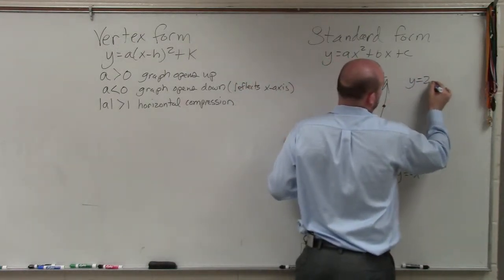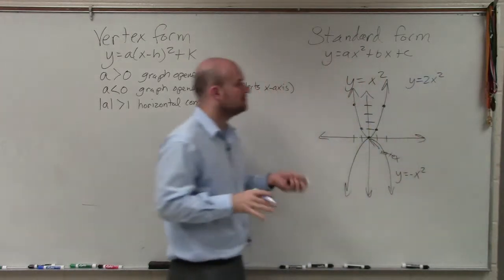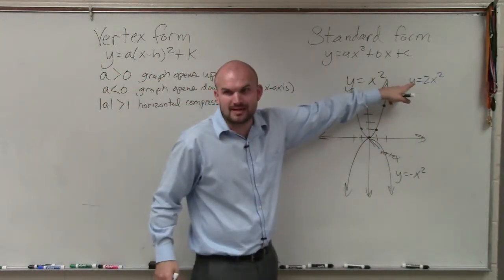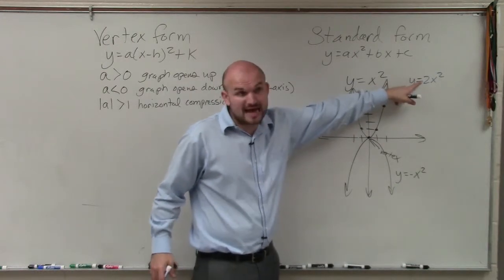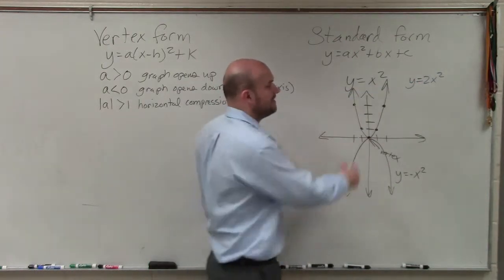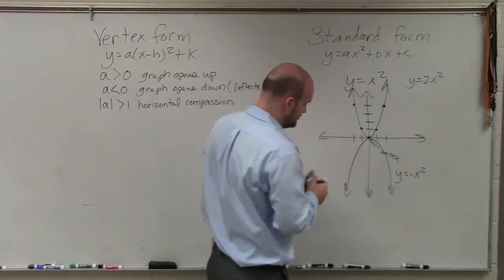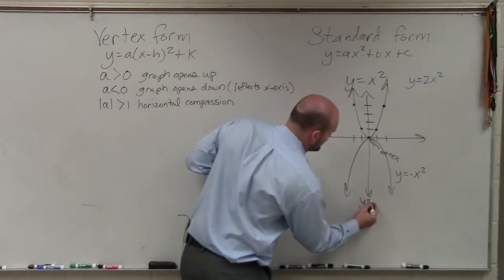What about if I looked at y equals 2x squared? I'm not dealing with b, c, h's, and k's. Let's just look at it in this format. If I had something, you can see the absolute value of A is greater than 1. If I was going to use a table of values here, actually, you know what? Let's do the y equals x squared here real quick.